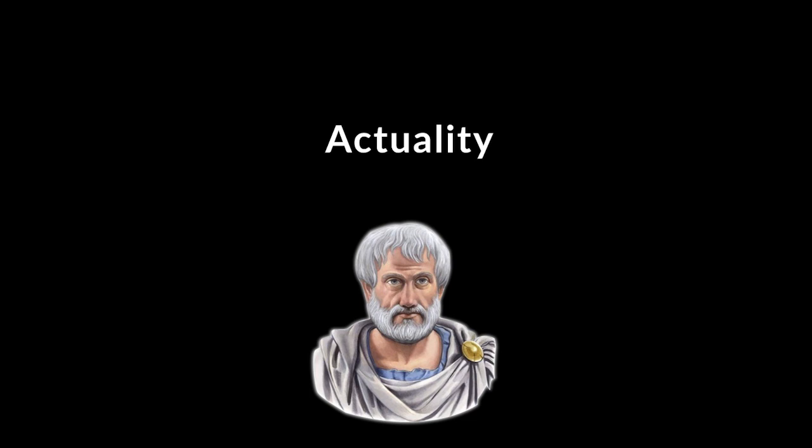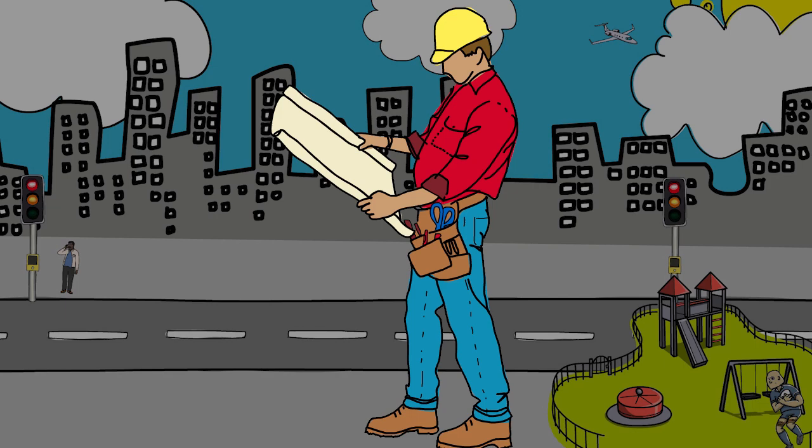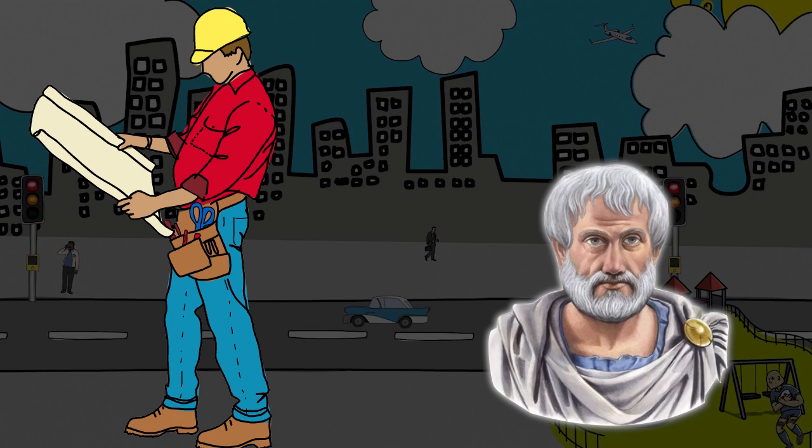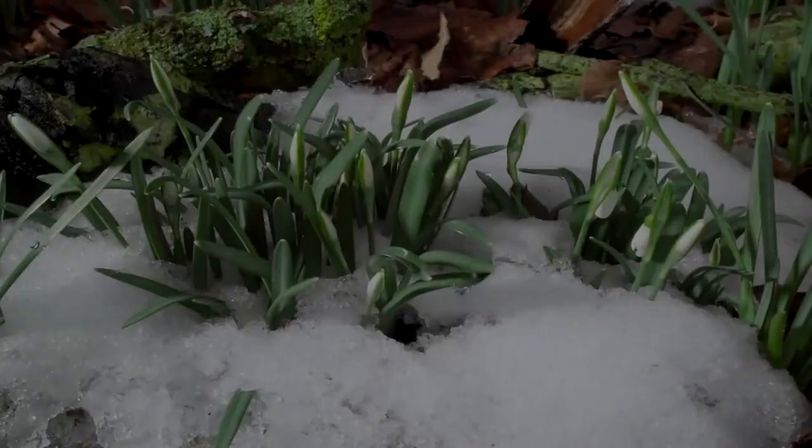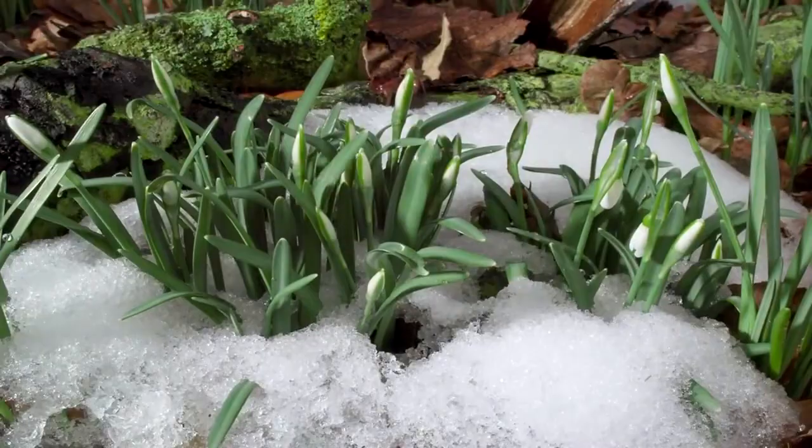The more the architect informs himself on the art of building, the more he will be able to actualize his vision in the external world. Aristotle believed that everything was taking part in this process of actualization. He called this the final cause, or the ultimate purpose for why something is the way it is. He believed that the universe around us is acting on purpose, striving to reach its fullest potential and trying to come to completion.